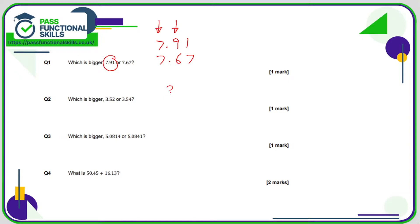Question number two, we've got 3.52 and 3.54. In the units everything is the same, in the tenths everything is the same, but in the one hundredths we've got a 2 and a 4. 4 is bigger than 2, so 3.54 is bigger than 3.52.